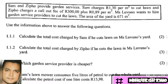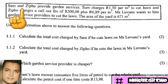Looking at question one, we are confronted with Sam and Zippo who provide garden services. Sam charges R1.30 per square meter to cut lawn, and Zippo charges a call-out fee of R300 plus 89 cents per square meter. Miss Livuno wants to hire garden service providers to cut the lawn. The area of the yard is 671 square meters.